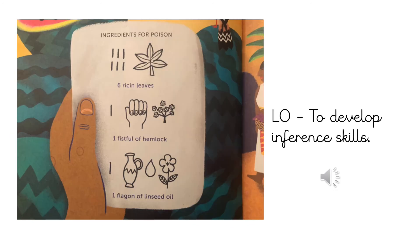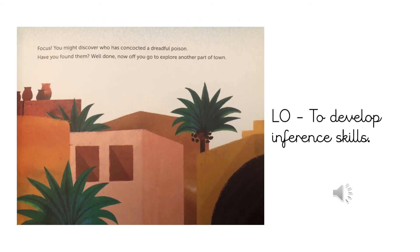Ingredients for poison: six ricin leaves, one fistful of hemlock, one flagon of linseed oil. Focus — you might discover who has concocted a dreadful poison. Have you found them? Well done. Now off you go to explore another part of town.